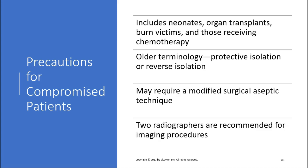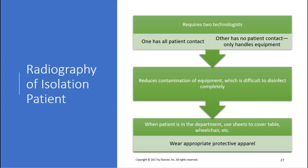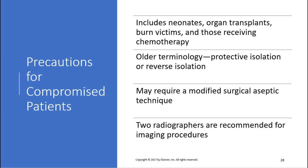Precautions for compromised patients — including neonates, organ transplant patients, burn victims, and those receiving high-dose chemotherapy — use protective or reverse isolation. With standard isolation, we're trying to protect ourselves; with reverse isolation, we're trying to protect the patient. These patients may require modified surgical aseptic technique. Two radiographers are recommended. The idea is that these patients don't have an immune system capable of fighting anything you expose them to, so you must protect them.